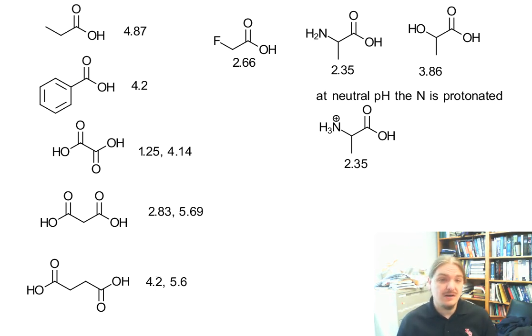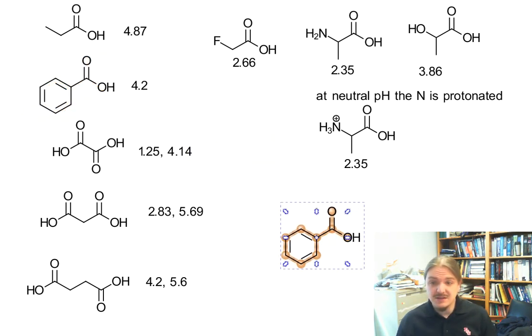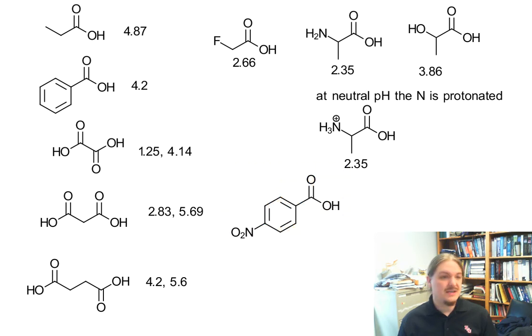It's worth noting that the benzoic acids are impacted by their substituents in sort of a predictable way. If you have an electron withdrawing group on benzoic acid, like a nitro group, then you would expect a lower pKa and you'd get it, 3.44.